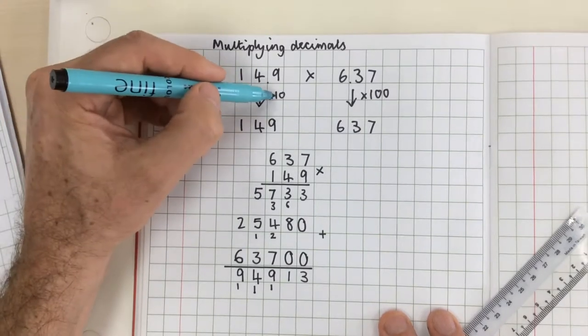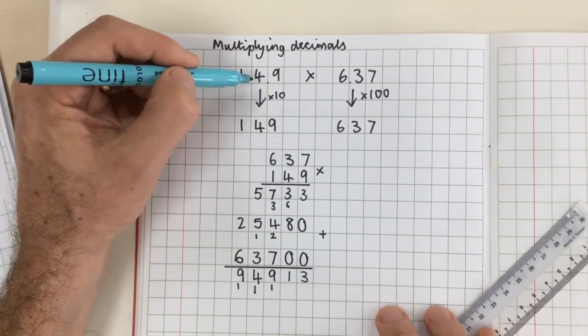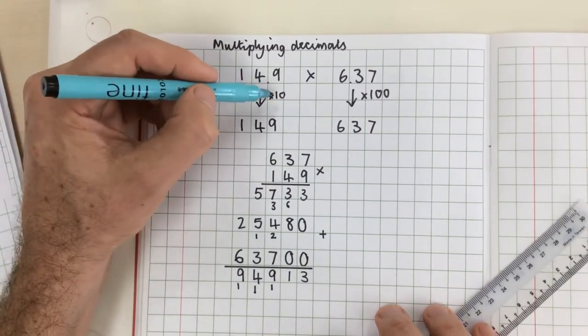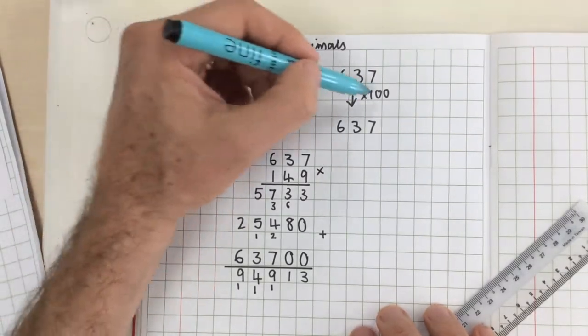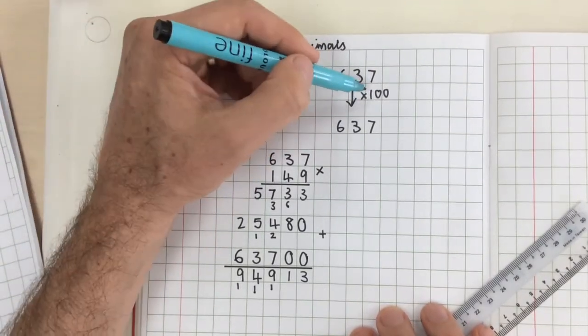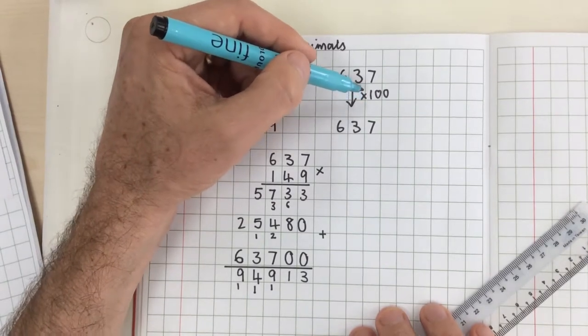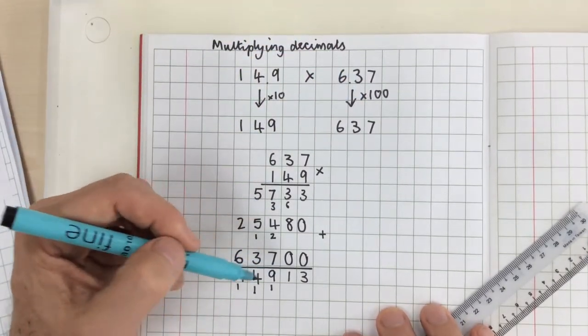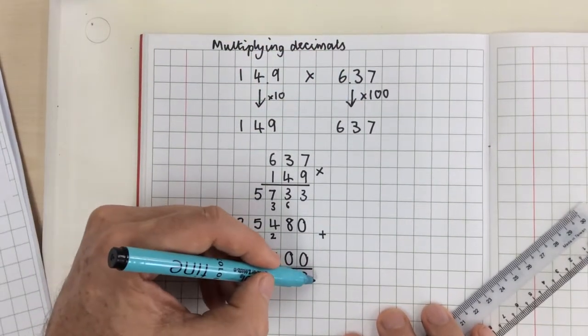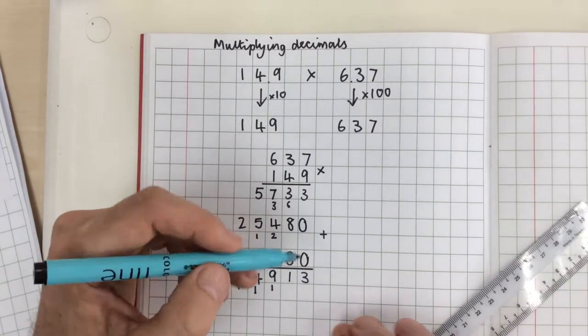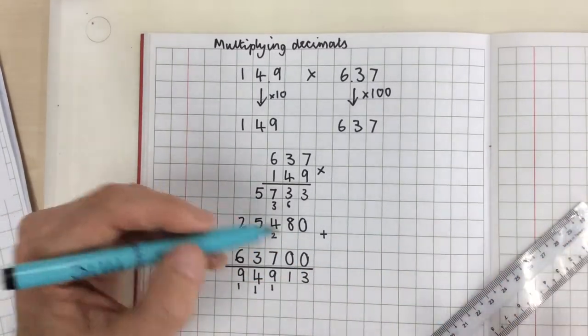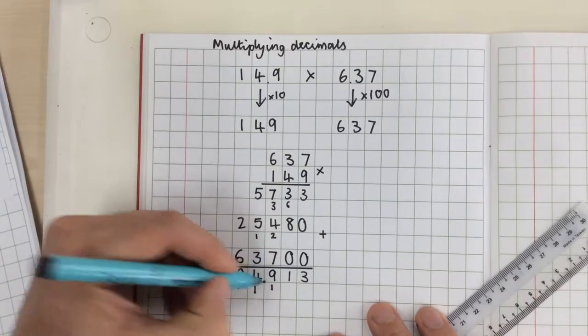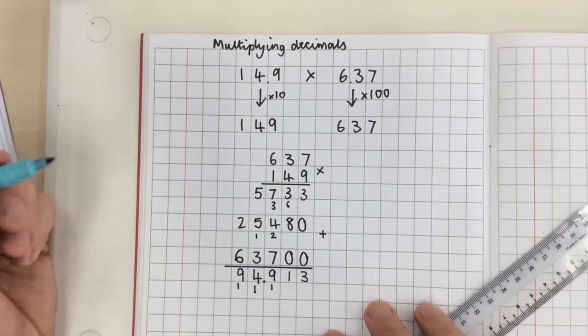Now, because I multiplied my numbers to start by 10 and by 100, all together I multiplied my numbers by 10 times 100 which is 1000. So I've got to divide my final answer by 1000 or move my digits three places to the right which is effectively putting the decimal point there.